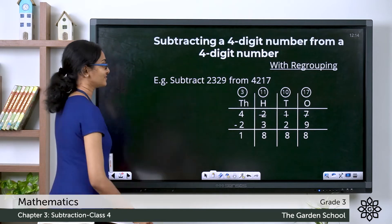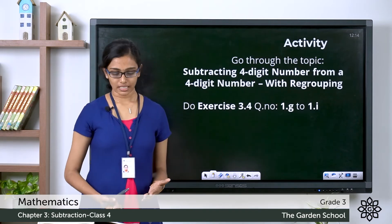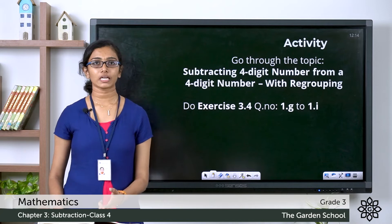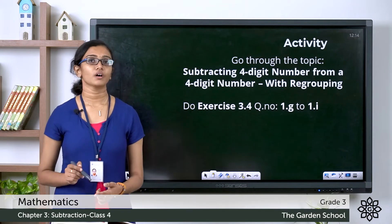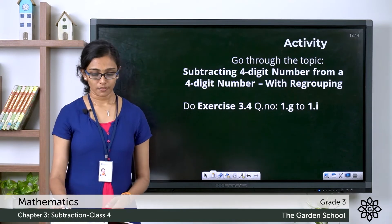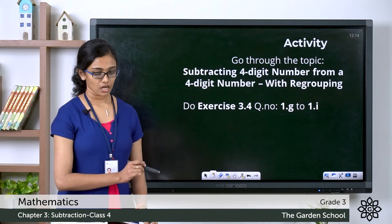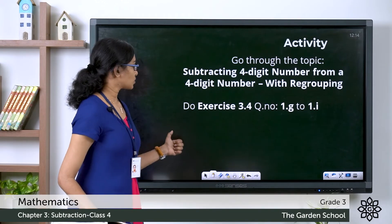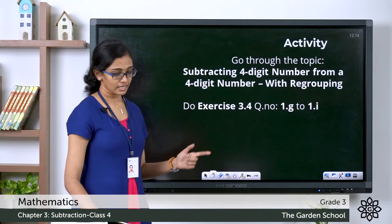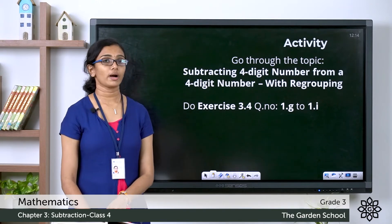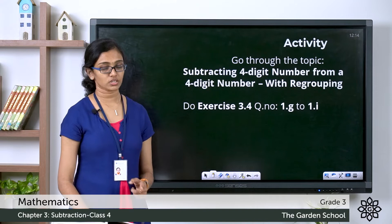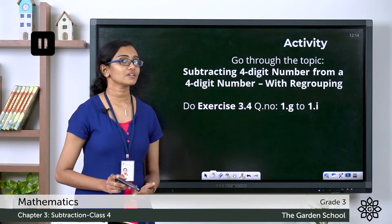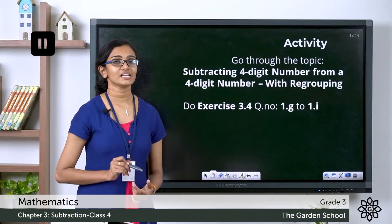I hope this is clear to you. You can go through the topic 'subtracting a 4-digit number from a 4-digit number with regrouping' on page number 41 of your textbook. Please go through the topic, then move on to exercise 3.4 and do questions 1G, 1H, and 1I — three questions. You can pause the video, finish the exercise, and come back.